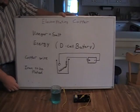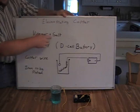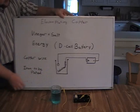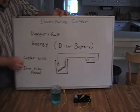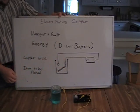Electroplating with copper takes several things. Vinegar, that's our solution. We add salt to conduct electricity in the jar. We have energy in the form of a D-cell battery. We have copper wire, that's where we're getting our copper from, and the item to be plated.